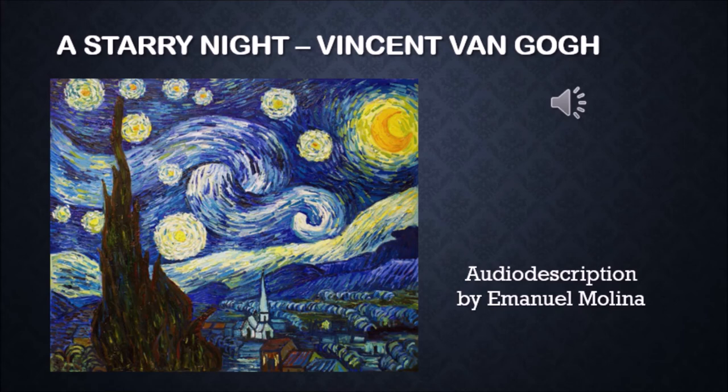The Starry Night is defined as a fictional interpretation of the city of Saint Remy the province, seen from his room at the mental hospital where Van Gogh stayed. Nature could be attributed to the divine in this work. Some people associate the painting to Joseph's story, the biblical character who had dreamed of the sun, the moon and eleven stars giving obeisance to him. Perhaps it is a reference to Van Gogh's family who doubted the success of his career.